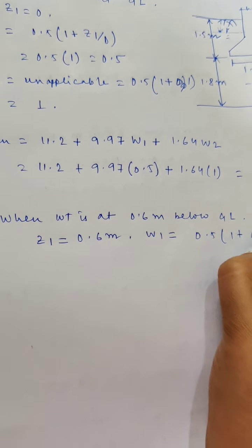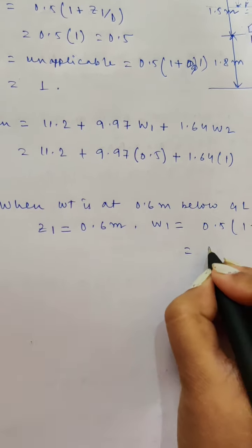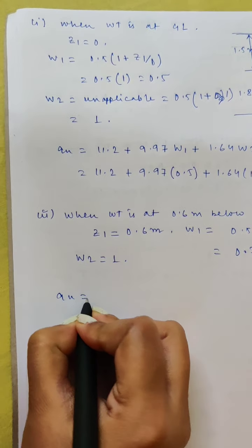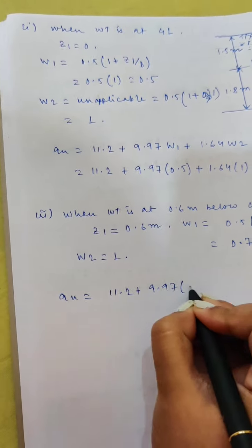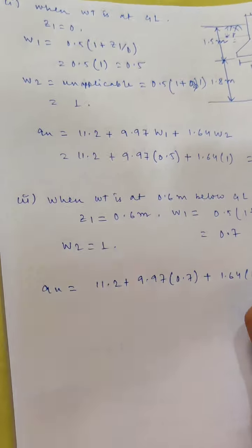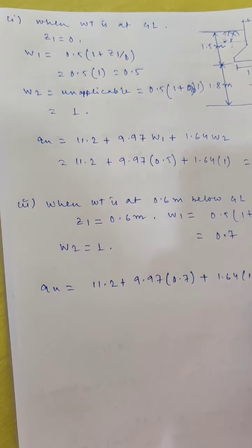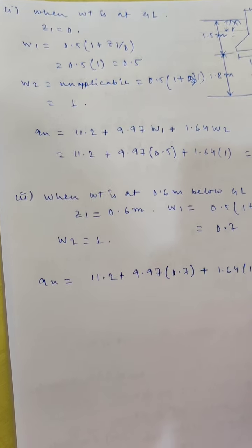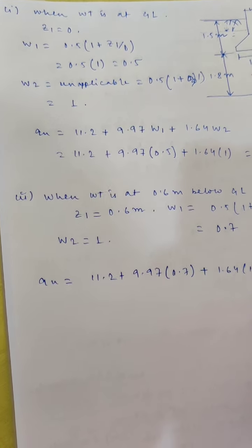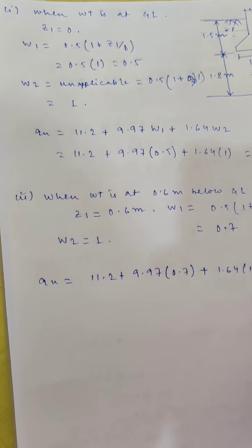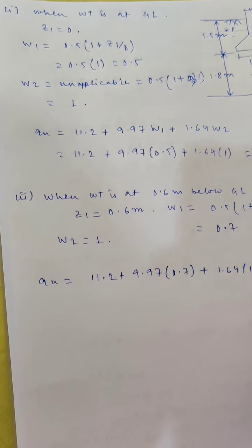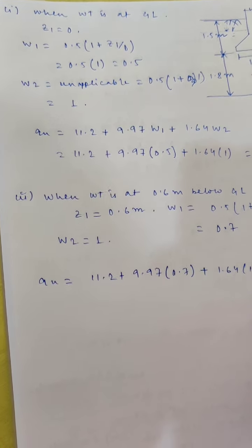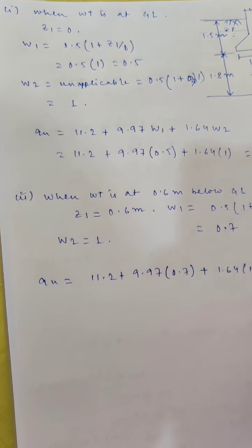Case 2: water table is at 0.6 meter below ground level. The water table lies within the embedment depth. Z1 = 0.6 meter. W1 = 0.5 × (1 + 0.6/1.5) = 0.5 × 1.4 = 0.7. W2 is unapplicable, so W2 = 1. Therefore qu = 11.2 + 9.97 × 0.7 + 1.64 × 1 = 19.82 ton per meter square.